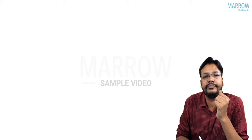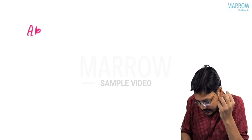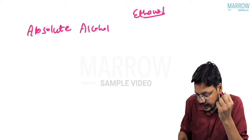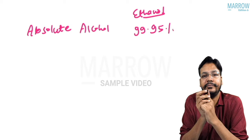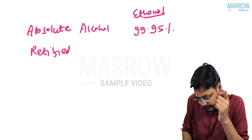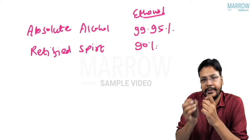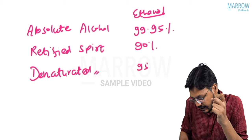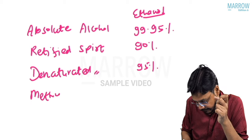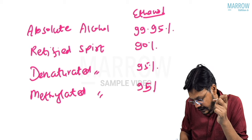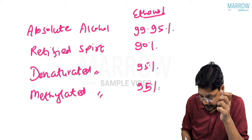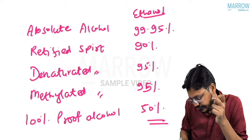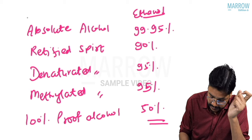You can get a question: what amount of ethanol is present in different preparations? In absolute alcohol, the ethanol concentration is 99.95%. Rectified spirit is 90%. Denatured spirit is 95%. Methylated spirit is also 95%. And 100% proof alcohol contains 50% ethanol.